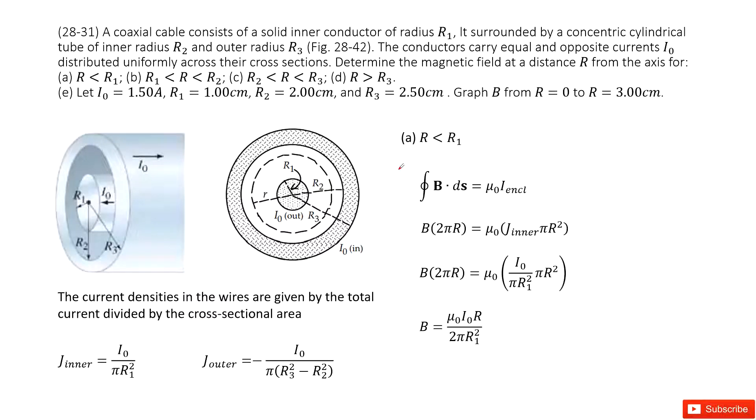Welcome to my channel. I'm Zhang Zingshu. Let's look at problem 31 in chapter 28. Chapter 28 is about sources of magnetic fields. This is a very typical application of Ampere's law.